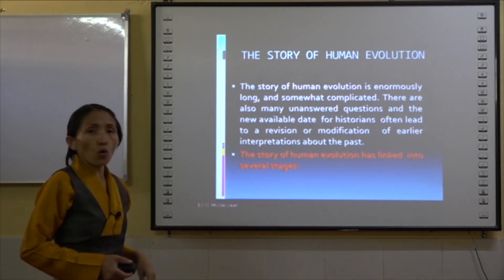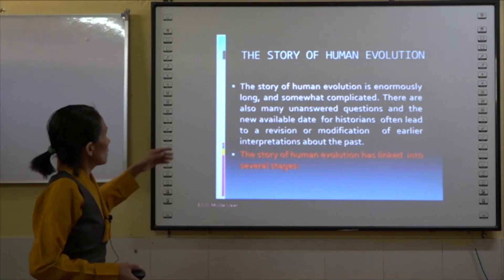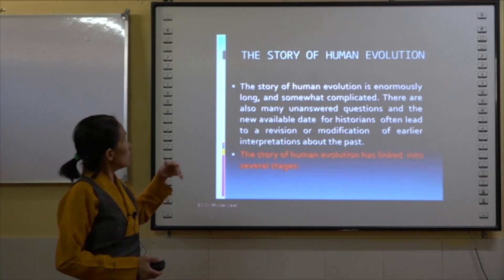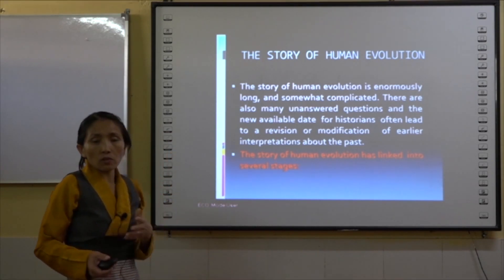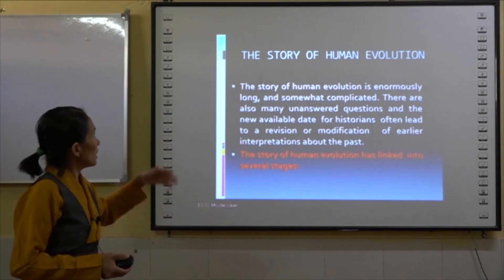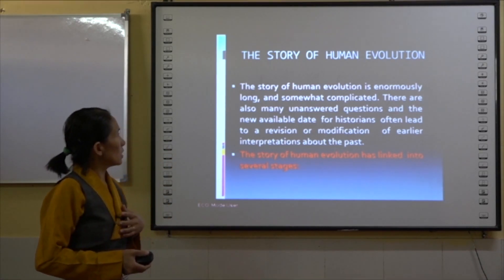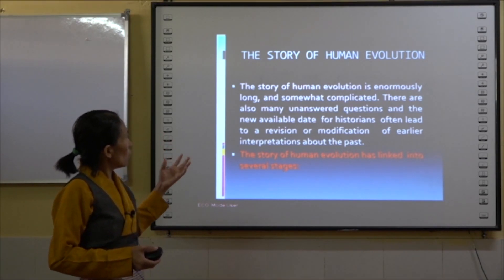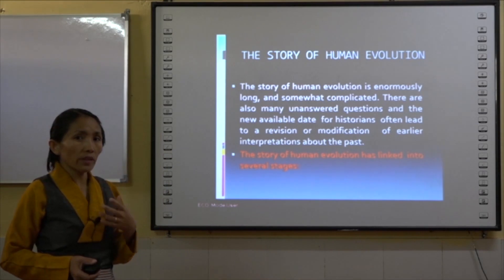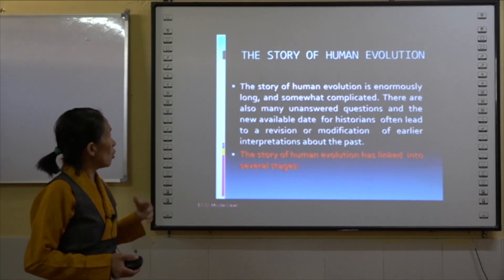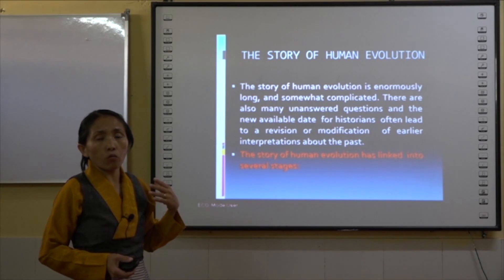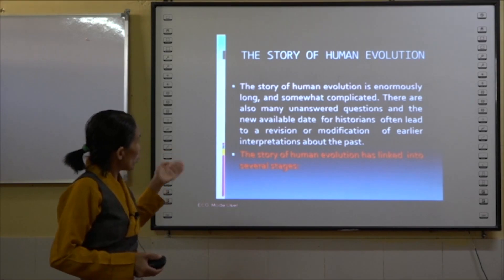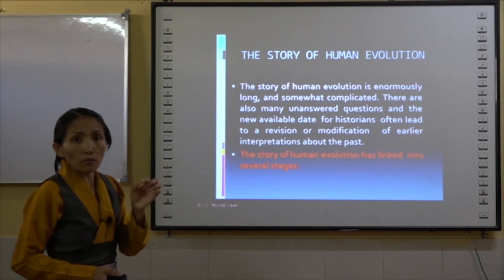The story of human evolution is enormously long and somewhat complicated, with many unanswered questions yet to be understood by historians and archaeologists. New available data often leads to revision or modification of earlier explanations. The story of human evolution is linked into several stages.